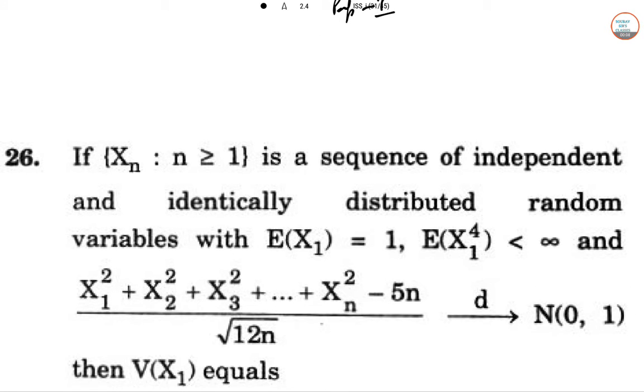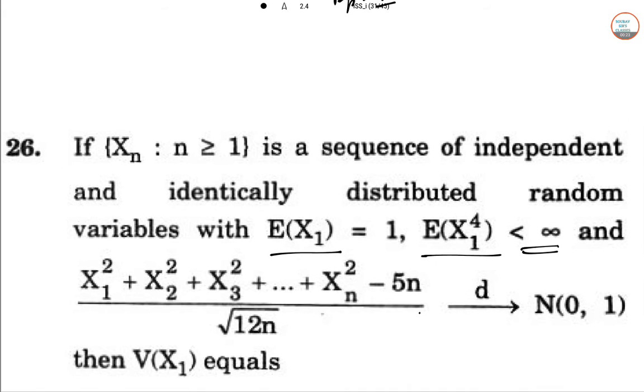In this question, if X_n, n ≥ 1, is a sequence of independent and identically distributed random variables with E(X_1) = 1, E(X_1^4) < ∞, and the sum of X_i squared minus 5n divided by root 12n converges in distribution to N(0,1), then we need to find the variance of X_1.